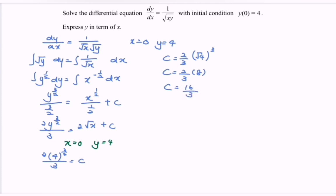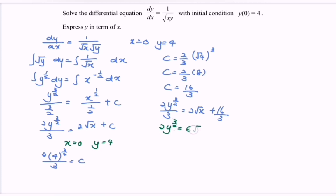Substituting c back, we have 2y to the power of 3/2 over 3 equals 2 square root of x plus 16 over 3. Multiplying all terms by 3 gives us 2y to the power of 3/2 equals 6 square root of x plus 16.